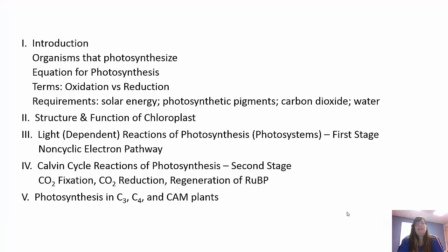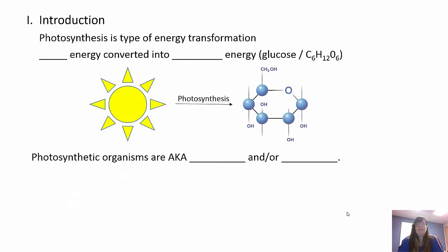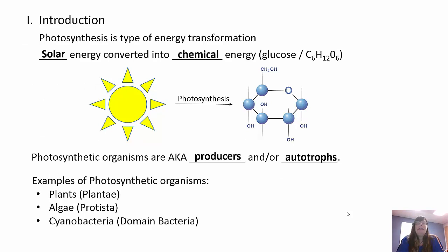We're going to talk about photosynthesis and then the reactions themselves specifically. Photosynthesis is energy transformation — we have solar energy from the sun coming in and being converted into chemical energy in the bonds of carbohydrates like glucose, which is C6H12O6. Photosynthetic organisms are also called producers or autotrophs, and they make their own food.